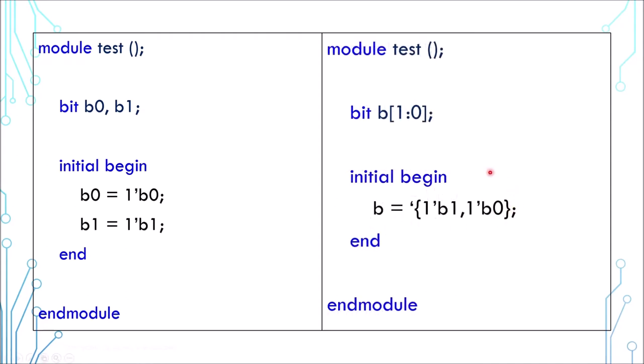You can provide an array value to an array variable straight away without having to modify its elements one by one. Array value is indicated by an apostrophe and a pair of curly braces. The example on the right achieves the same effect as the example on the left.